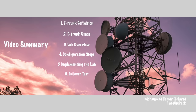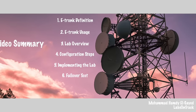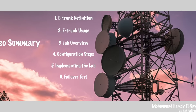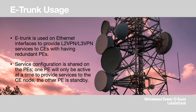Multi-Chassis Link Aggregation, or E-Trunk, stands for Enhanced Trunk. It implements link aggregation between two PE devices connected to one CE service node. CE nodes can be dual-homed to two PEs with device-level link protection based on Link Aggregation Control Protocol, LACP. E-Trunk is used on Ethernet interfaces to provide L2 VPN or L3 VPN services to CEs with redundant PEs.